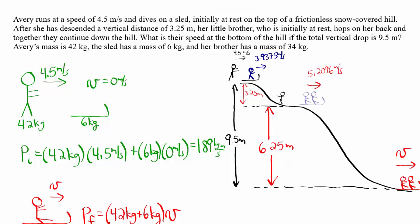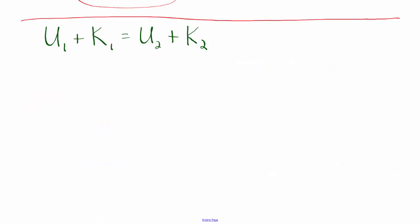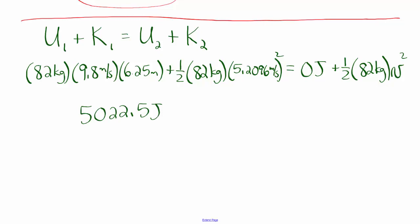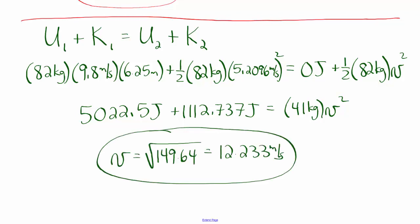Using conservation of energy, the potential energy at 6.25 meters plus the kinetic energy from moving at 5.2096 meters per second equals the final kinetic energy, 0.5 times 82 times v squared, or 41v squared. The potential energy is 5,022.5 joules and the kinetic energy is 1,112.737 joules, giving 41v squared equals 6,135.237. Solving for v gives Avery, her brother, and the sled a speed of 12.233 meters per second at the bottom of the hill.